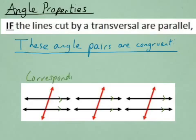Corresponding angles are congruent. For example, those two angles are congruent. It also applies to the other pairs of corresponding angles in the other corners.